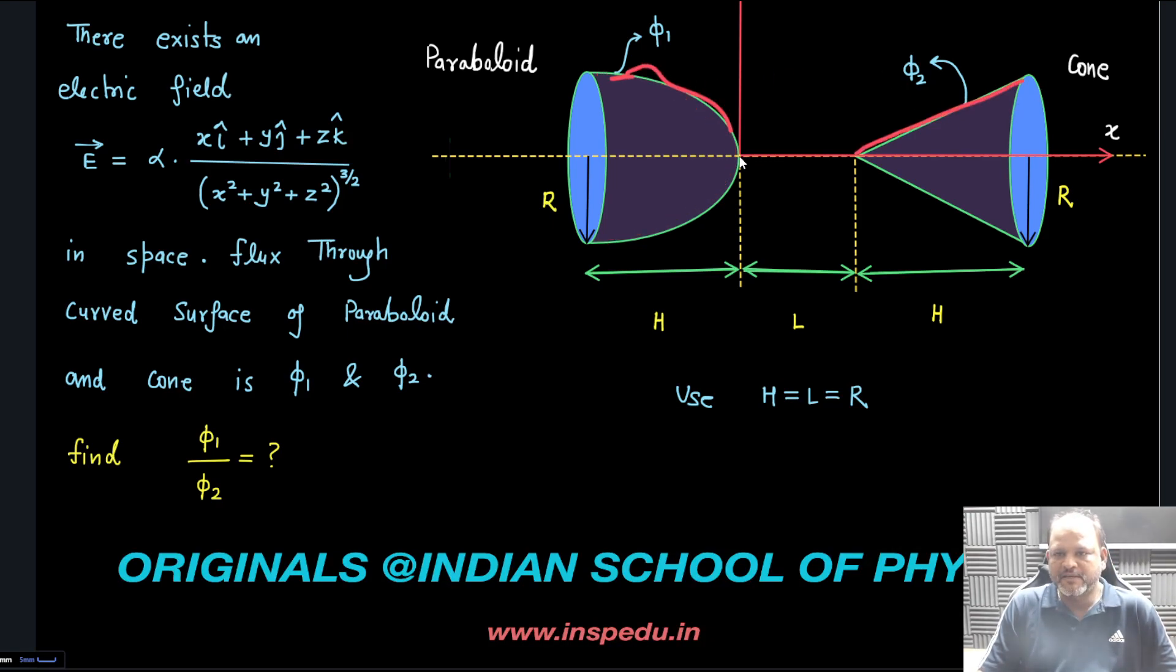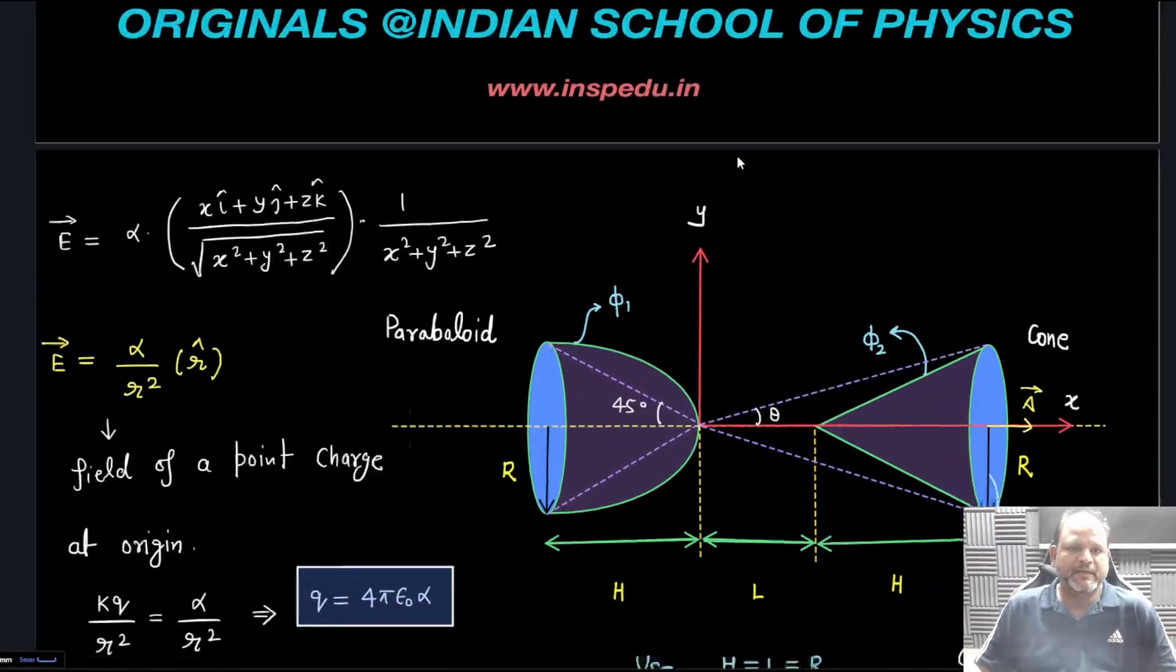Flux through the curved surface of cone is φ₂, so we need to calculate φ₁/φ₂ in this particular problem. We have to use H = L = R for a better answer. How many students made mistakes? Let's discuss this problem.